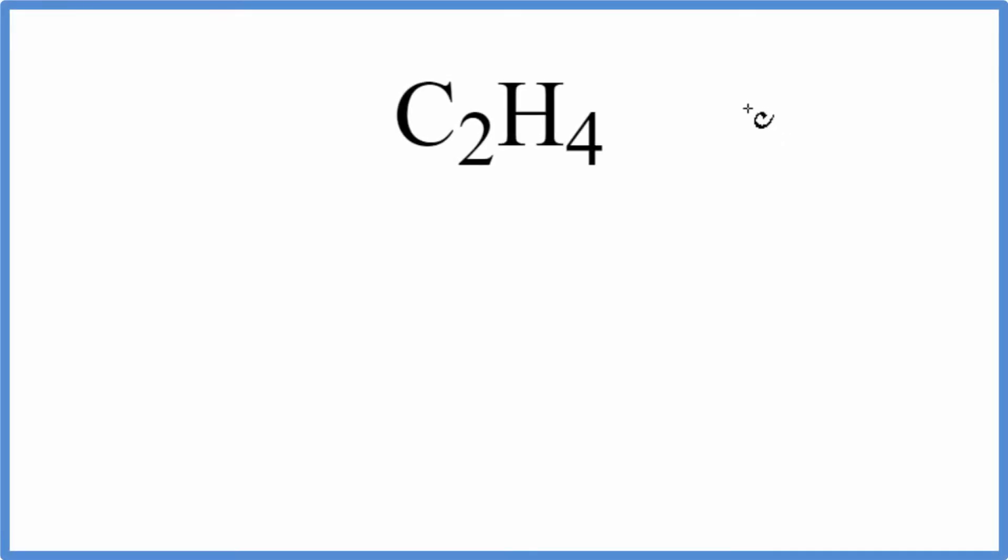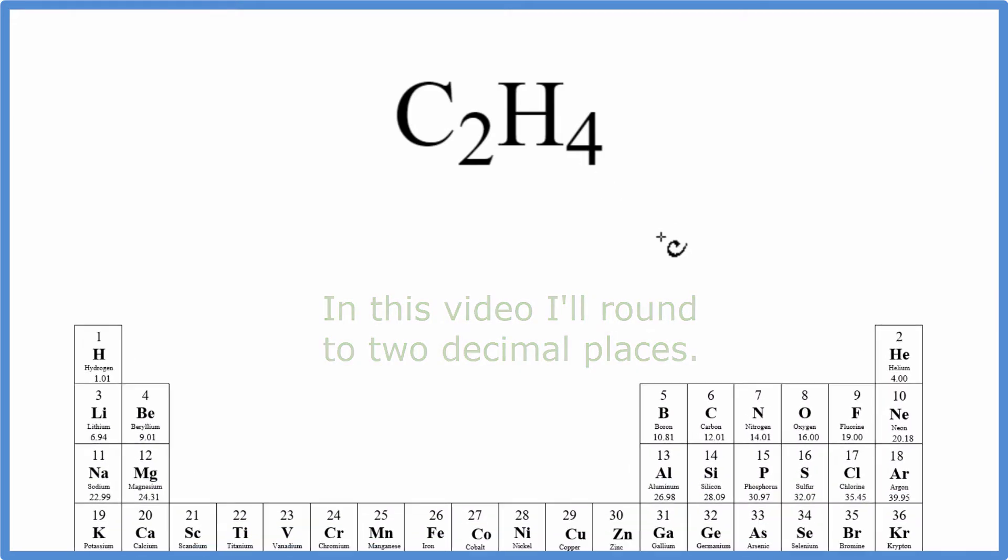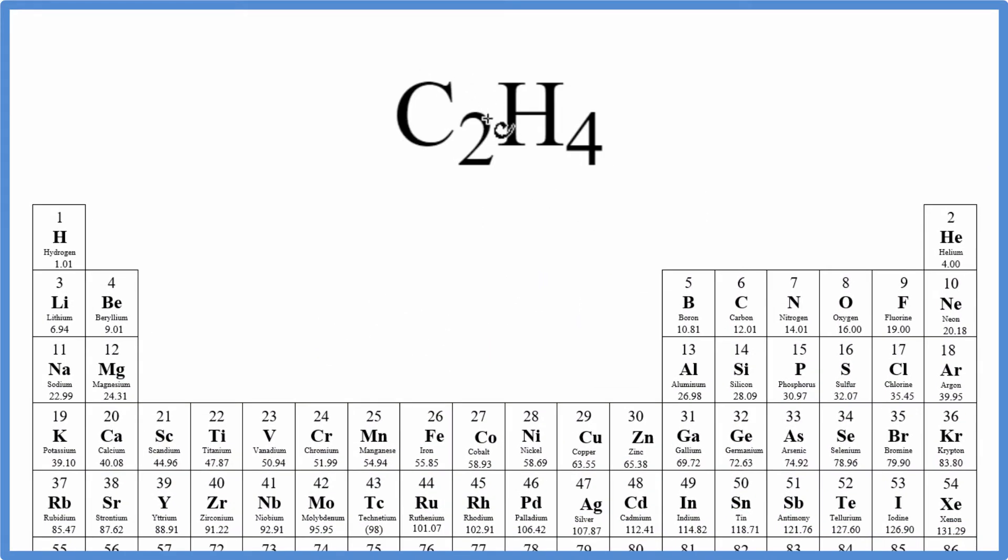In this video, we'll calculate the molar mass or molecular weight for C2H4, ethene. On the periodic table, we'll find the atomic mass for each element, and then we'll add them together.